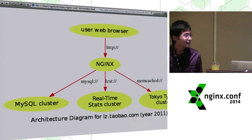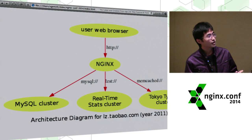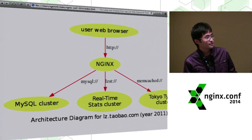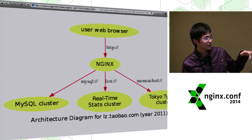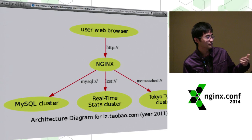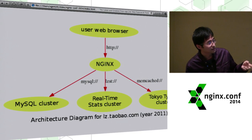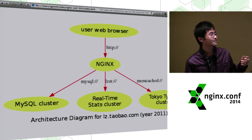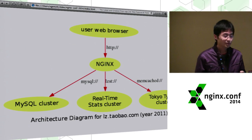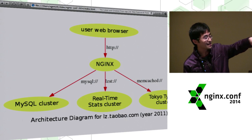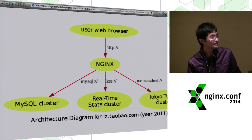That was the original architecture of that old data analytics web application. We had just two or three NGX servers in the middle to serve all the incoming traffic. There's a lot of traffic. We had to access a huge MySQL cluster, and the Taobao real-time statistics cluster, which uses its own binary wire protocol, and also a Tokyo Tyrant cluster, a key-value storage for other things. In this architecture, we used to run PHP in the middle, after NGX.